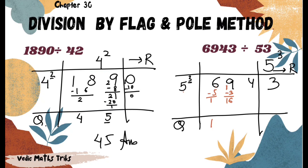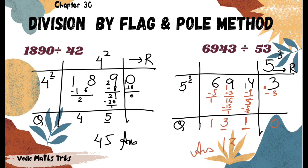We divide 16 by 5: it goes 3 times (5×3=15), leaving a remainder of 1. The remainder goes alongside the next digit 4, making 14. We multiply 3 by the flag: 3×3=9, and subtract 9, giving 5 as the next divisor. Dividing 5 by 5 gives 1 with remainder 0. We then multiply 1 by flag 3: 1×3=3, subtract 3, and get 0. The final answer is 131.